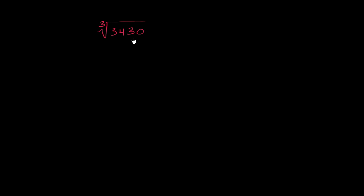So 3,430 is clearly divisible by 5 and 2, or it's divisible by 10. So let's do that. First we can divide it by 2. It's 2 times, let's see, 3,430 divided by 2 is 1,715.